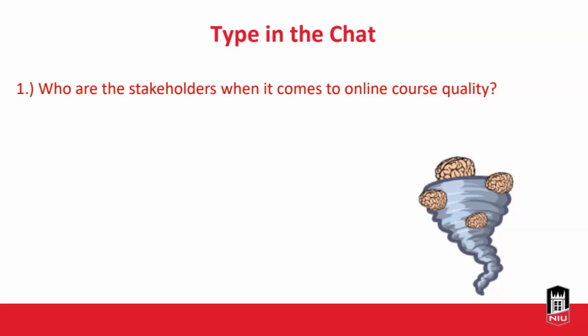Out of curiosity — who do you think are the primary stakeholders when we talk about online course quality? Who's really invested in this? Please type in the chat. Responses include students, the instructor, the institution, and departments — yes to all of these.